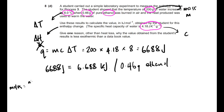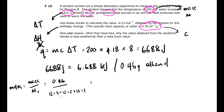Moles equals mass over M_r. My mass is 0.46. The M_r of ethanol (CH₃CH₂OH): C is 12+3, CH₂ is 12+2, OH is 16+1 — that comes to a grand total of 46. So 0.46 divided by 46 gives a lovely number of 0.01 moles.